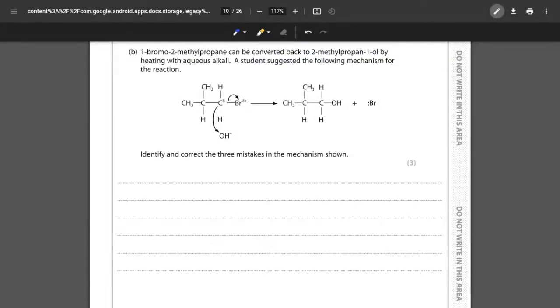Part B is now looking at the mechanism for this conversion of 1-bromo-2-methyl-propane back into 2-methyl-propan-1-ol by heating it with aqueous alkali, and we are given a mechanism. There are of course some problems in this mechanism and it is up to us to identify three mistakes. This conversion should be a nucleophilic substitution reaction.